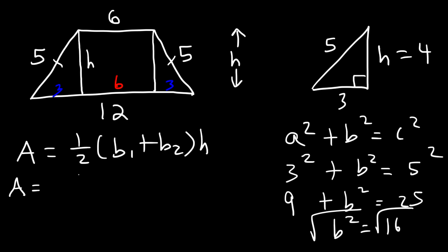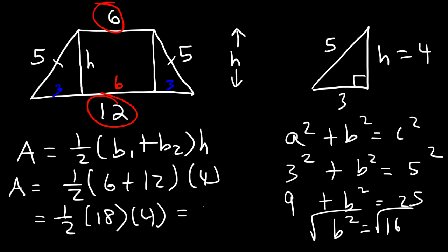So in our example, b₁ is 6, b₂ is 12. So this is going to be 1/2(6 + 12) times the height of 4. 6 plus 12 is 18. And half of 18 is 9. So we have 9 times 4, which is 36. So this is the area of the trapezoid. It's 36 square units.